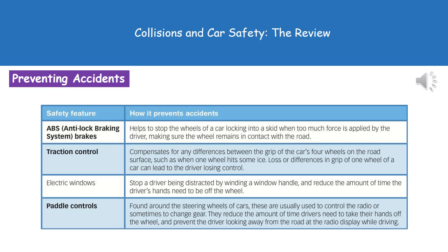The first prevention feature is ABS brakes, or anti-lock braking systems. If you slam your brakes on in a car without ABS, the wheels can lock and you end up in a skid with no control over the vehicle. What ABS brakes do is prevent those wheels from locking when you press hard on the brake pedal, avoiding the skid and giving you greater control of your car.